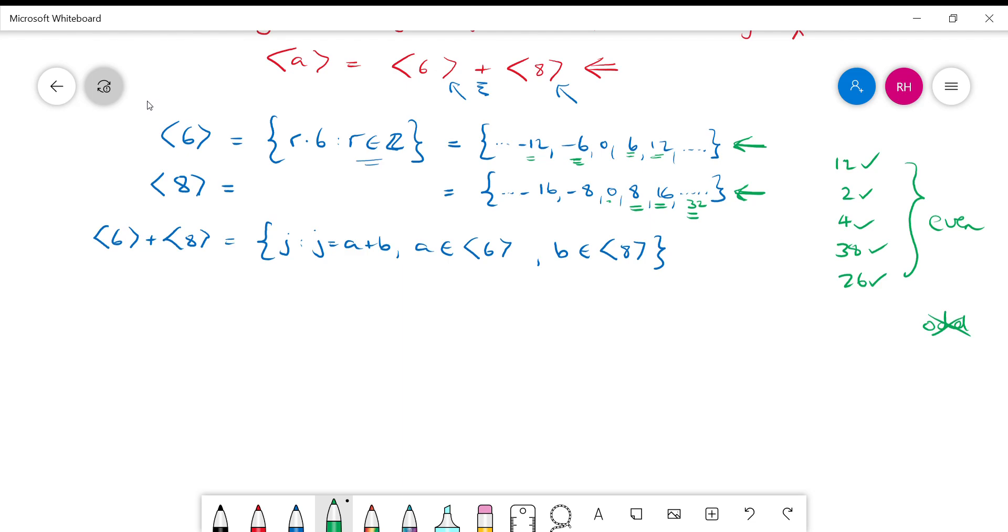If you want to prove it, then you would need to use something like Bezout's identity and the Euclidean algorithm, or you could argue it. You could probably just argue it through some sort of logical argument that you can't have an odd element. And you could also argue that you can get every even element.